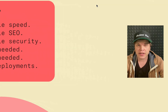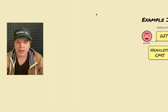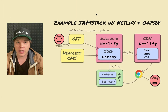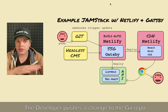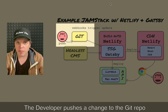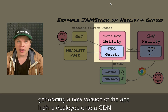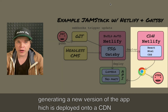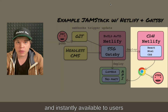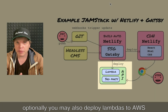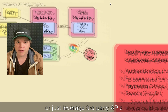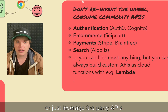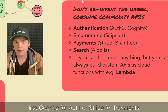For example, a JAMstack setup with Gatsby and Netlify could look something like this. The developer pushes a change to the repo, which triggers a build, generating a new version of the app, which is deployed onto a CDN and instantly available to users. Optionally, you may also deploy lambdas to AWS or just leverage third-party APIs like Cognito for auth or Stripe for payments.